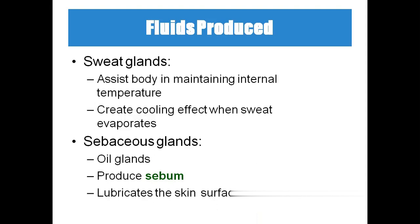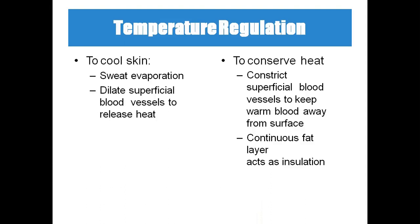The skin secretes two important fluids: sweat and sebaceous secretions — we also call sebaceous glands oil glands. We sweat to maintain the internal temperature and cool the body. Oil glands secrete oil called sebum, which lubricates the skin. To cool the skin during hot climate, the body sweats more; when sweat evaporates, the body cools down.